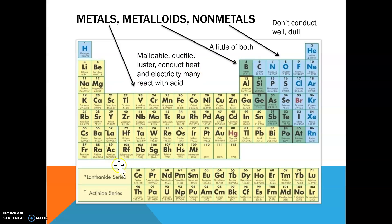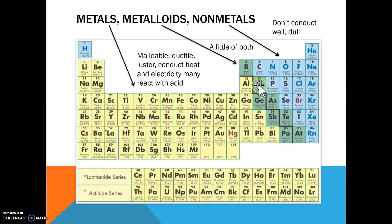Hopefully you have this on one of those periodic tables, and you colored in the metals, which are most of the periodic table, the nonmetals, and make sure you got the right elements for the metalloids. You might want to write this down. The metalloids are: boron, silicon, germanium, arsenic, antimony, tellurium, polonium, and astatine.